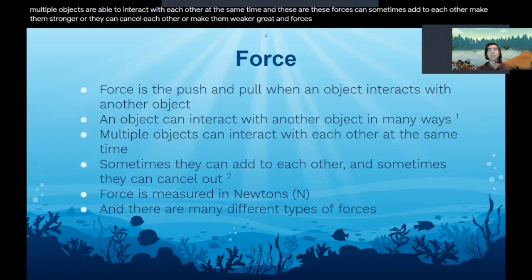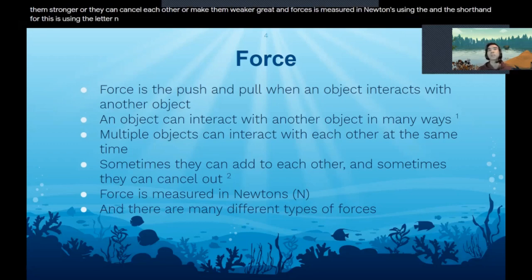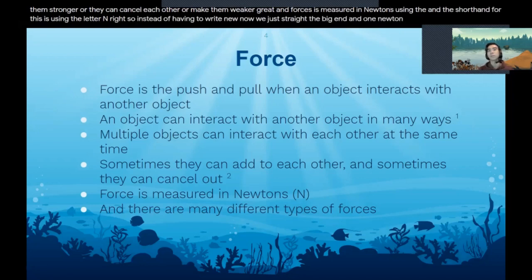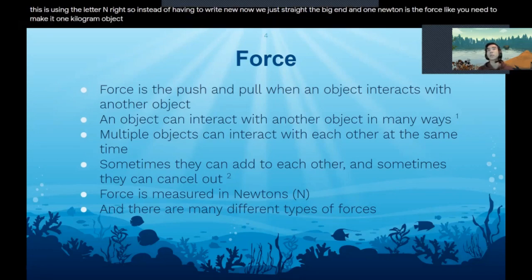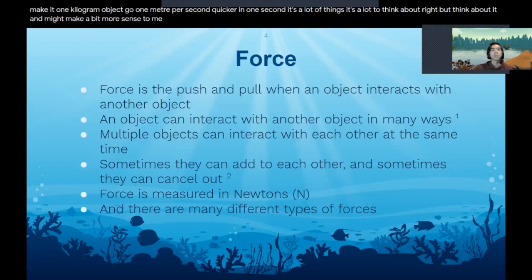Forces are measured in newtons, and the shorthand for this is using the letter N. So instead of having to write newton we just write the big N. One newton is the force you need to make a one kilogram object go one meter per second quicker in one second. It's a lot to think about, but let's think about it and it might make a bit more sense.